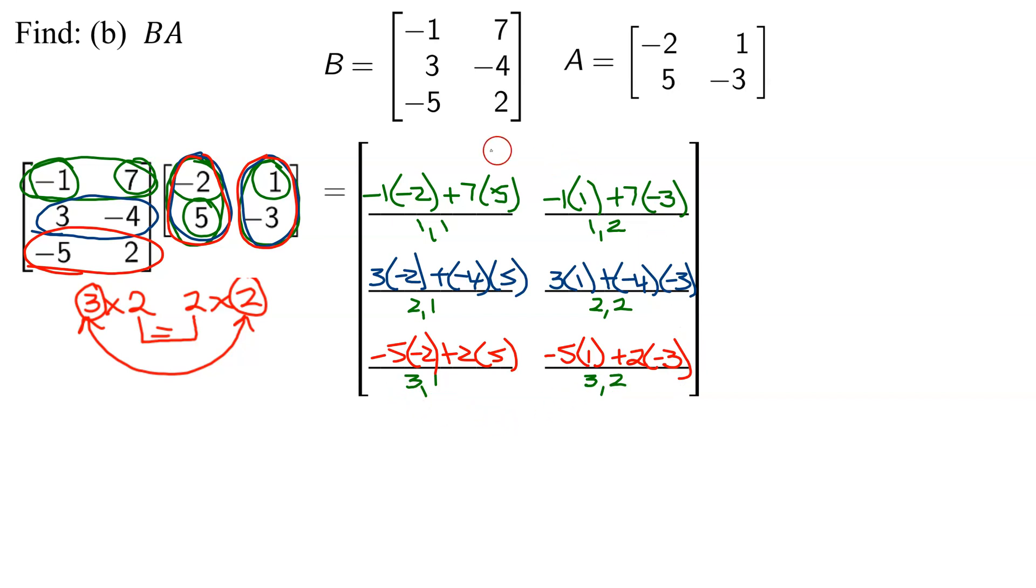Some people like to skip this step and do it in their head. I think that's an easy way to make careless mistakes. The other reason I like to write this step is that I can double check my work. If you notice in every pair, the second element should check vertically. Notice negative twos, fives, ones, and negative three. And the first pair matches horizontally. Negative one, seven, three, and negative four. Last row, negative fives and twos. If all those match up, it says that you've set it up correctly. Now all it is is arithmetic.